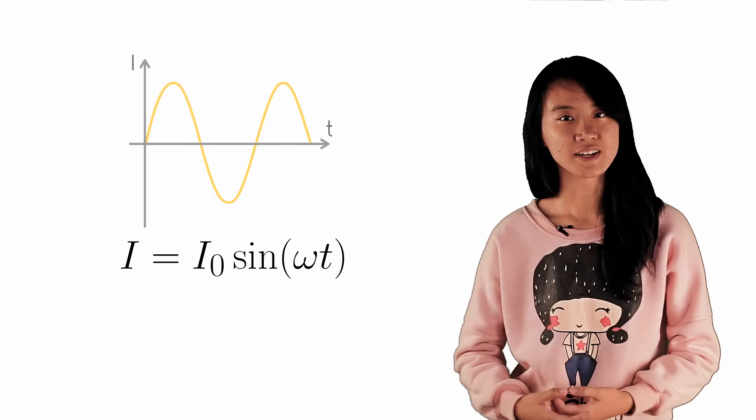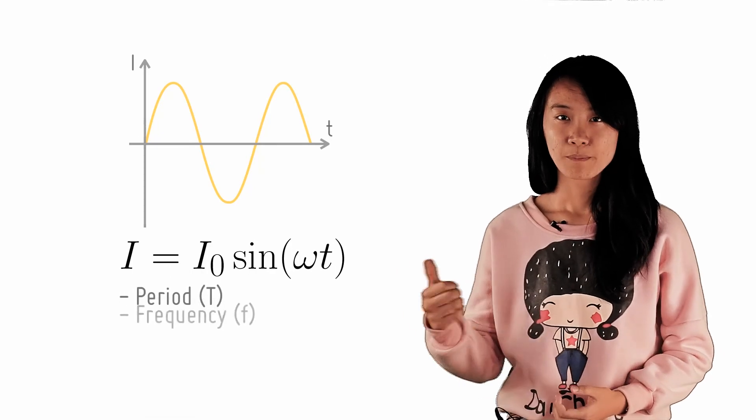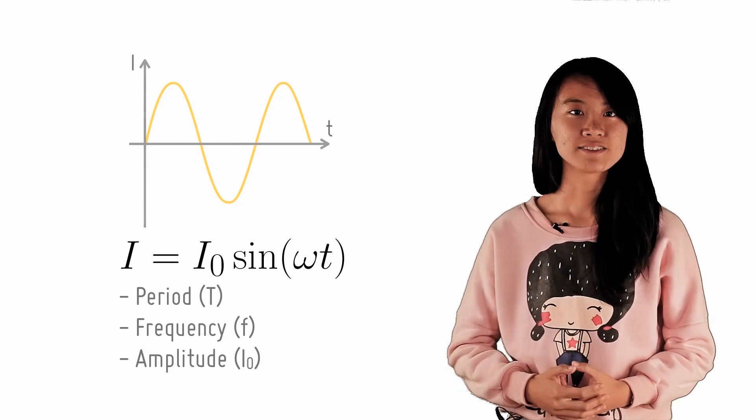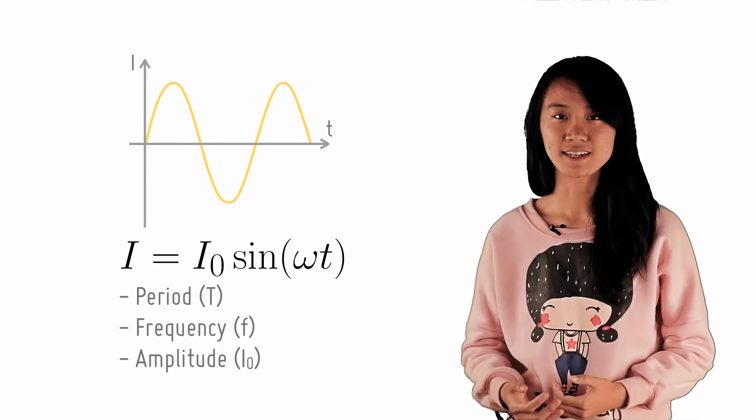Recall the characteristics of a sinusoidal AC: period, frequency, and amplitude. How are these represented in this equation of a sinusoidal AC?